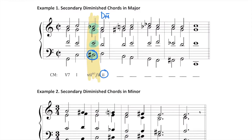This is tonicizing the two chord. So instead of using a V or V7 of ii — which would have had the root of A, being scale degree five in the key of two — we're now tonicizing using the leading tone as the root of the chord.